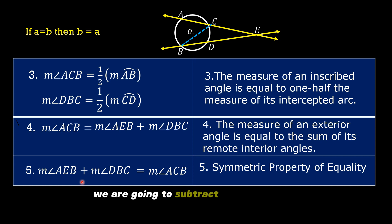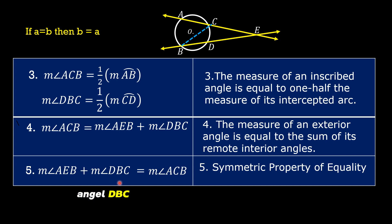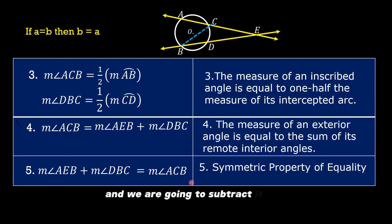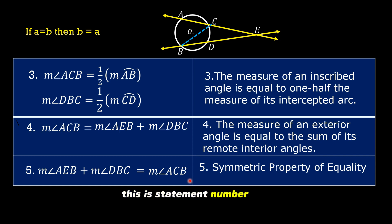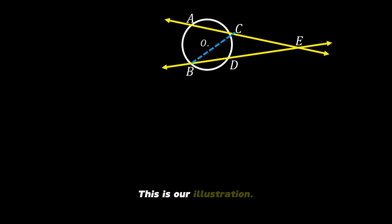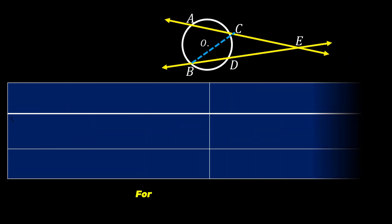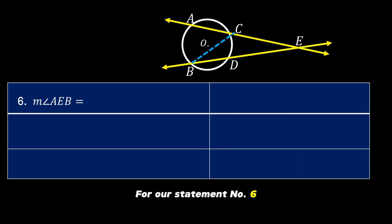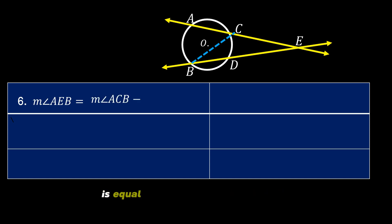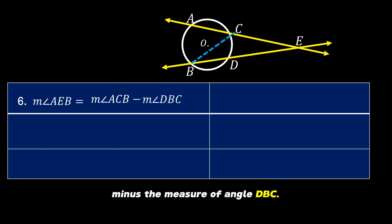For statement number six, we are going to subtract the measure of angle DBC from both sides of the equation. The result is: the measure of angle AEB is equal to the measure of angle ACB minus the measure of angle DBC. The reason is the subtraction property.